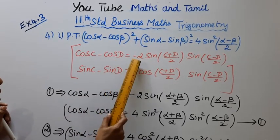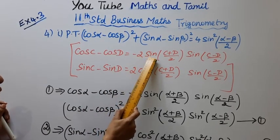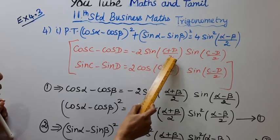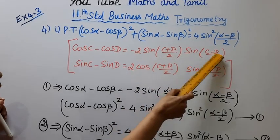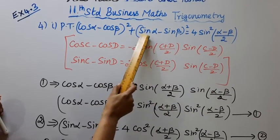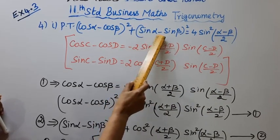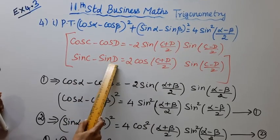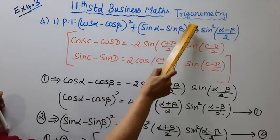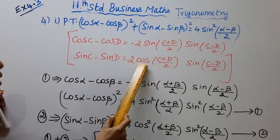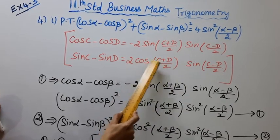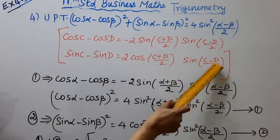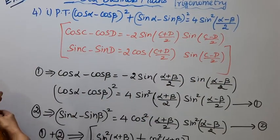Now, cos c minus cos d equals negative 2 sin((c+d)/2) sin((c-d)/2). And sin c minus sin d equals 2 cos((c+d)/2) sin((c-d)/2).